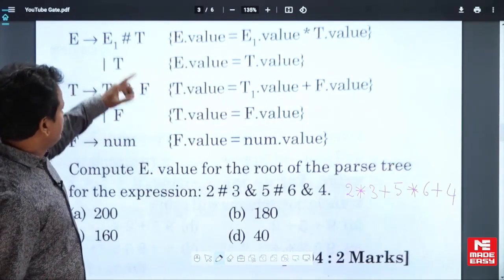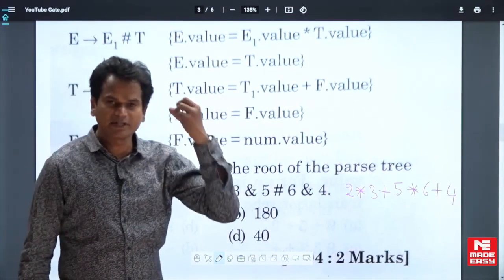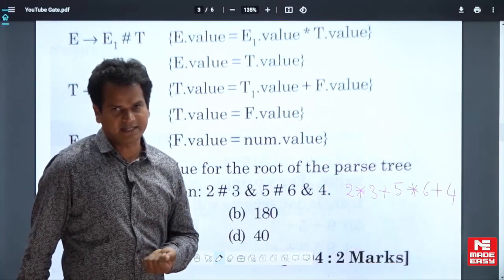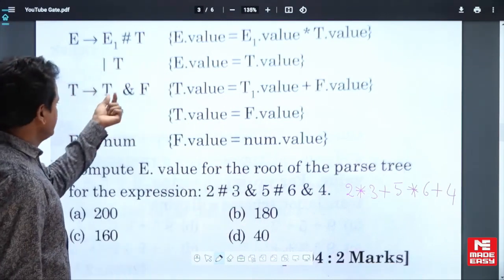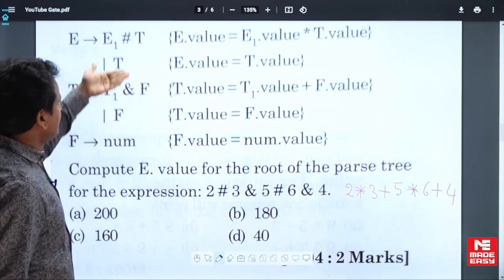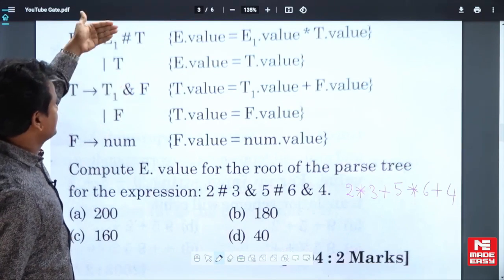Now, here are two operators: ampersand and hash. Whatever operator is defined at the lower level will have the highest priority. Here, ampersand has the highest priority because it is defined at the lower level, and hash is defined at the starting level. Ampersand has more priority than hash.